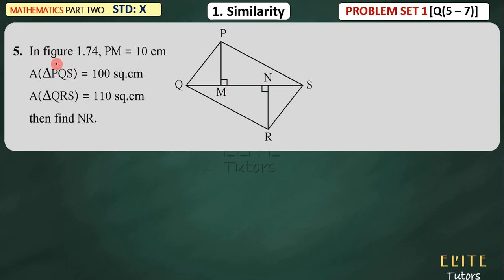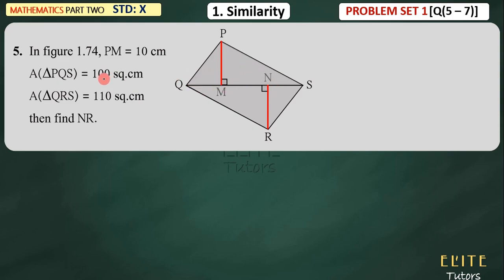This is question number 5. In this figure, PM is equal to 10 cm, so this perpendicular length is 10 cm. Remember that length is 10 cm. And the area of triangle PQS — this triangle — is 100 square cm. And the area of triangle QRS is 110 square cm. You have to find out the value of NR. This triangle area is 100 square cm, this triangle area is 110 square cm, and this height value is 10 cm.